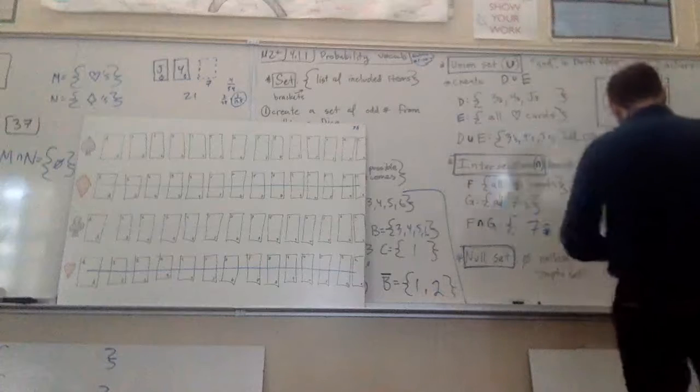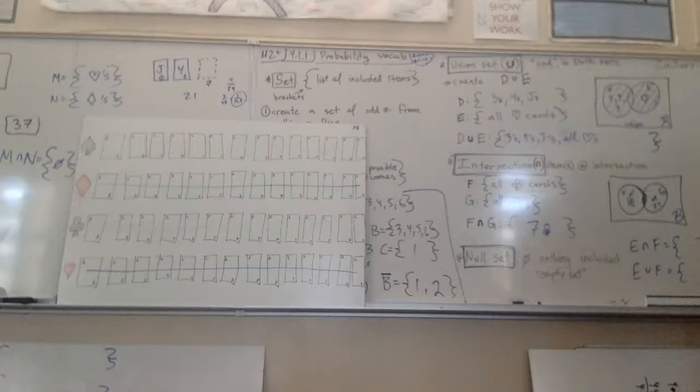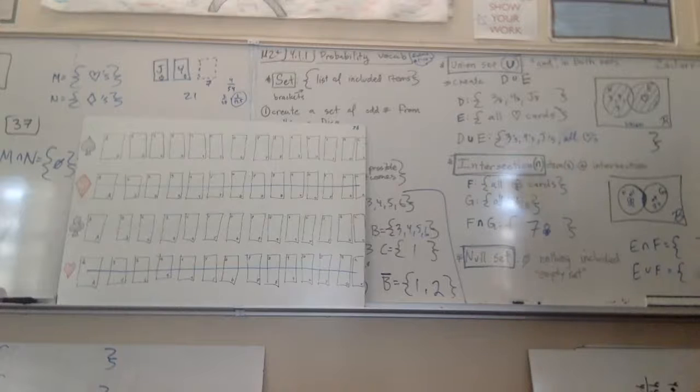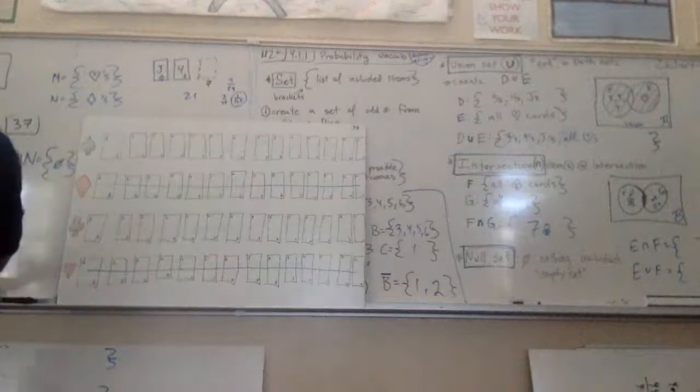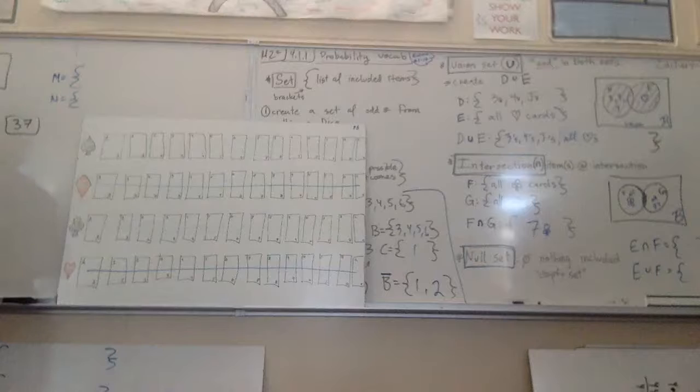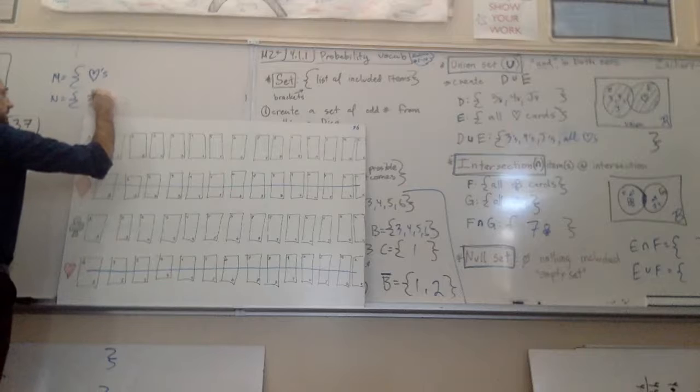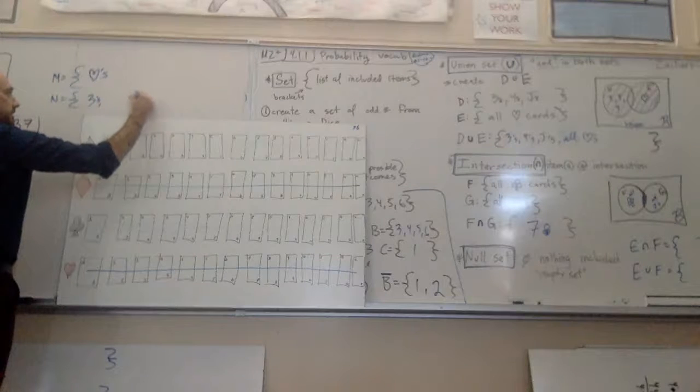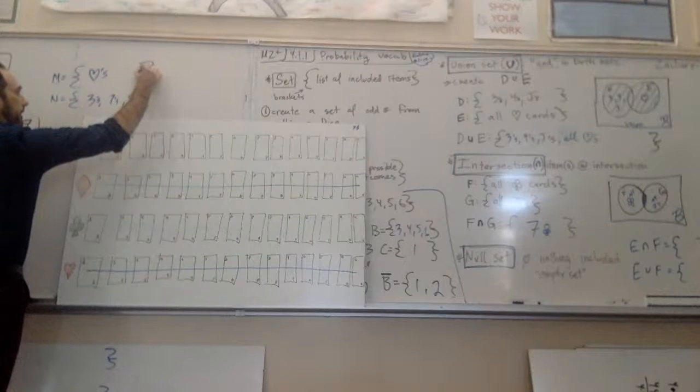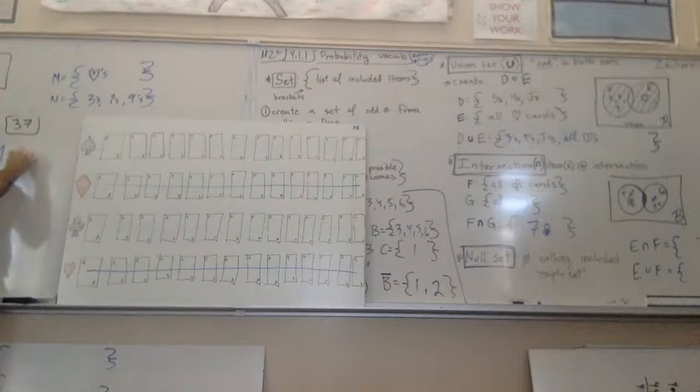Okay. No, that one's wrong. Let's see. Let's change up what these sets are. I want you to, please, let's say this is hearts. These are threes and nine. Three, seven. I want you to find the intersection of M and N, please.